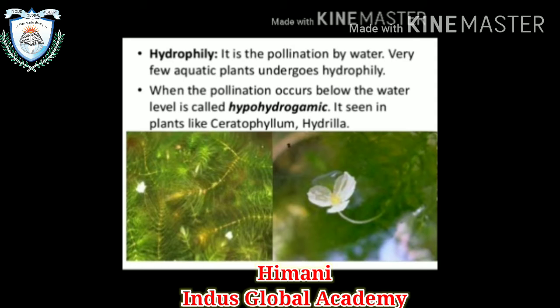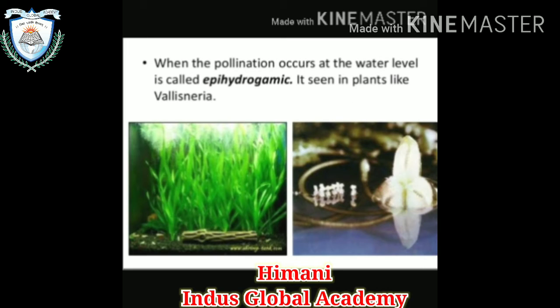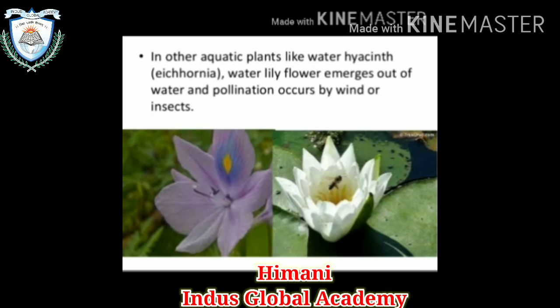Now, hydrophily — pollination by water. Very few aquatic plants undergo hydrophily. When pollination occurs below the water level, it is known as hypohydrogamic, seen in plants like Hydrilla and Ceratophyllum. When pollination occurs at the water level, it is known as epihydrogamic, seen in plants like Vallisneria. In other aquatic plants like water hyacinth and water lily, the flowers emerge out of the water and pollination occurs by wind or insects.